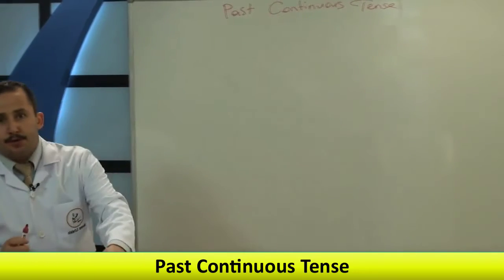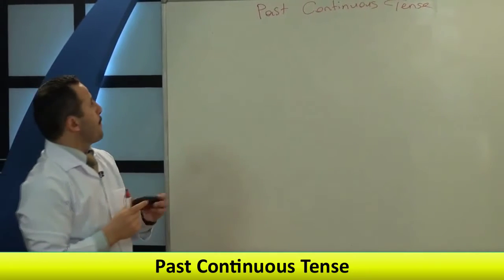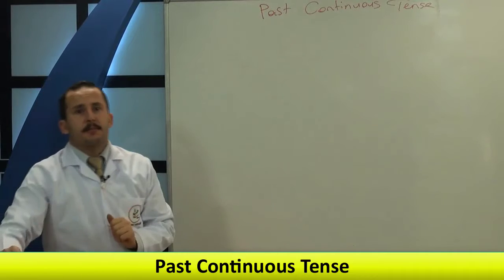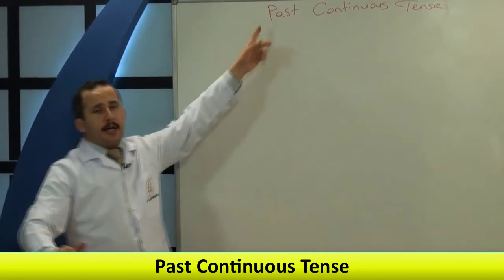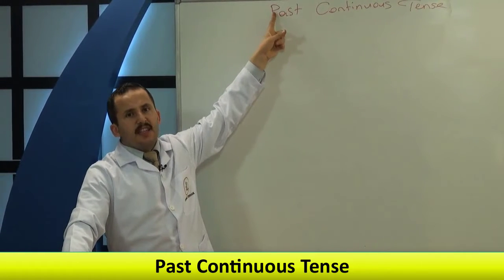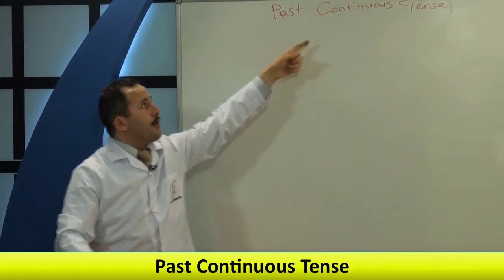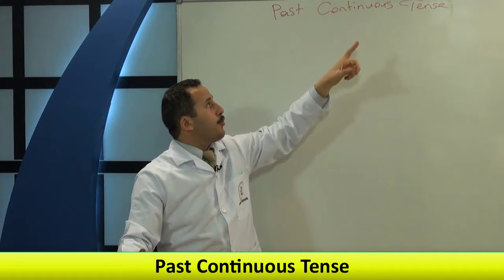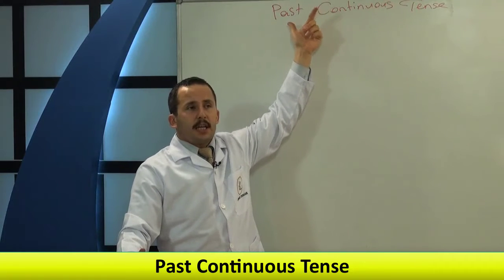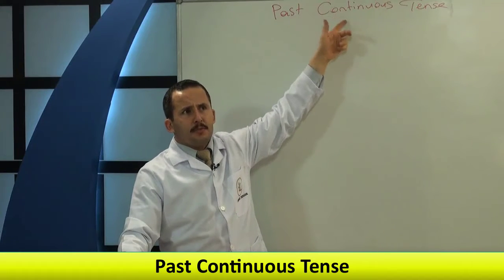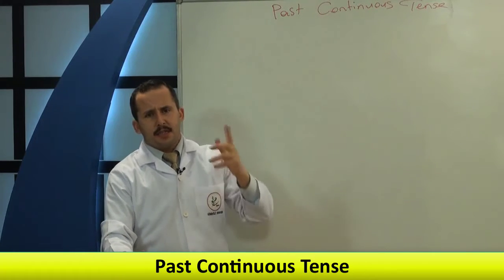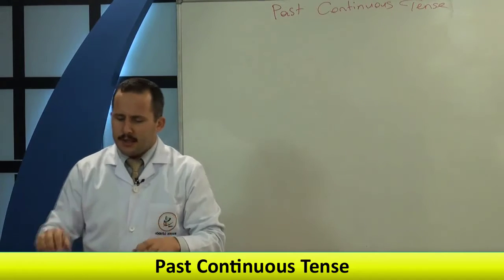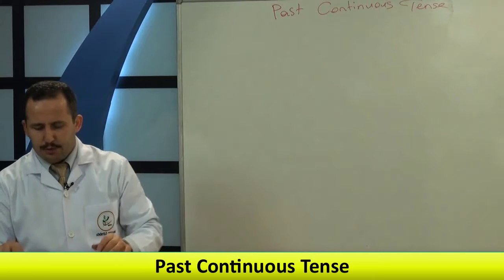Past Continuous Tense. Şimdi kısa bir hatırlatmadan sonra başlayalım. Past ne demek hatırlayalım — geçmiş zaman demek. Continuous da şimdiki zaman demekti. Geçmiş zaman ve şimdiki zamanı nasıl birleştireceğiz biraz düşünelim. Geçmişte devam eden bir olayı anlatmak için bu tense'i kullanıyoruz.